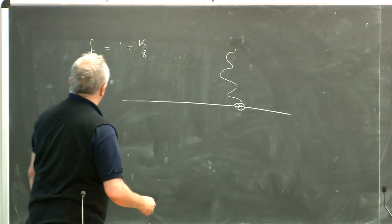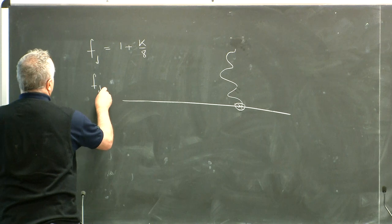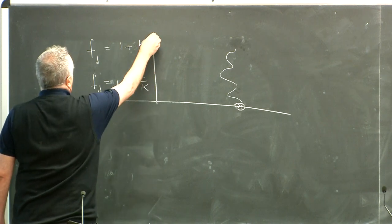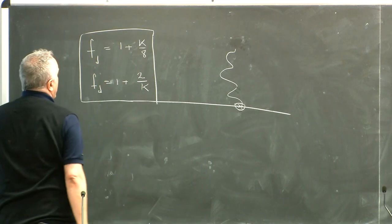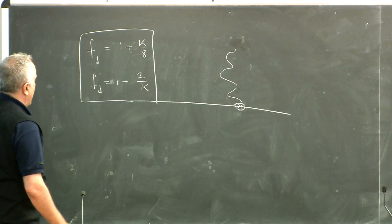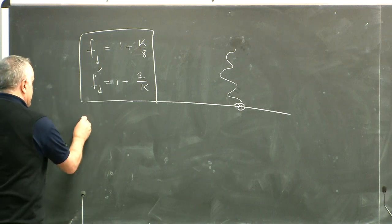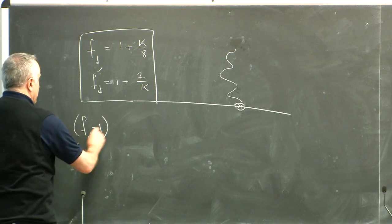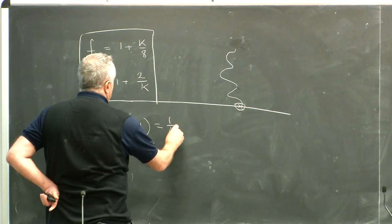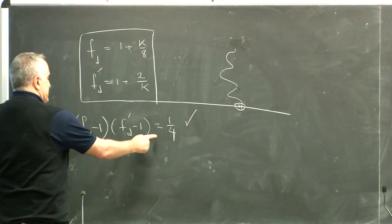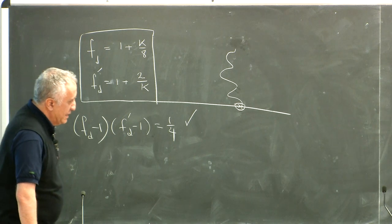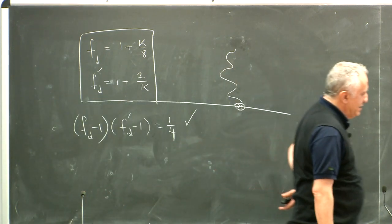Since I have that duality, I have a fractal dimension which is 2 over kappa. So I have two fractal entities connected together by this duality. You can see that (FD − 1)(FD′ − 1) = 1/4. This relationship existed before SLE was invented, so it is an achievement for SLE that this is confirmed to be correct.